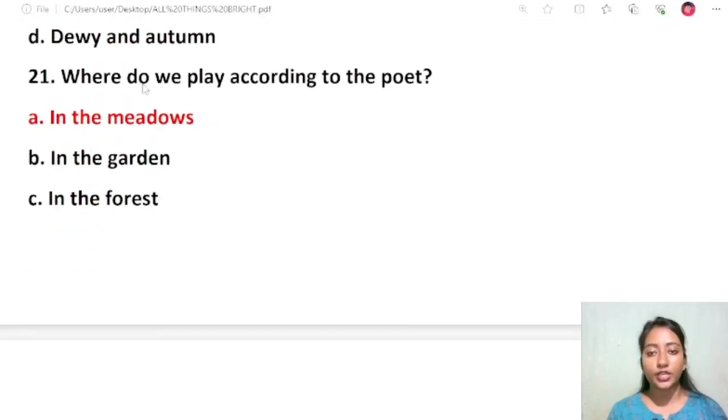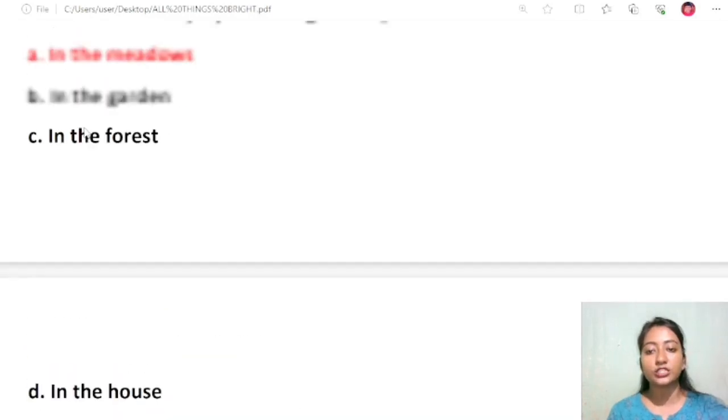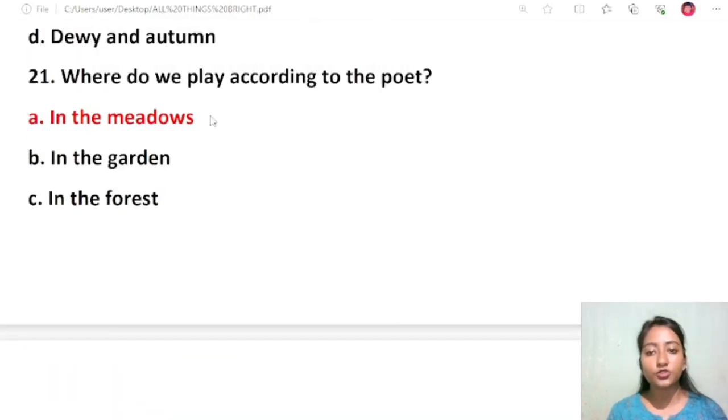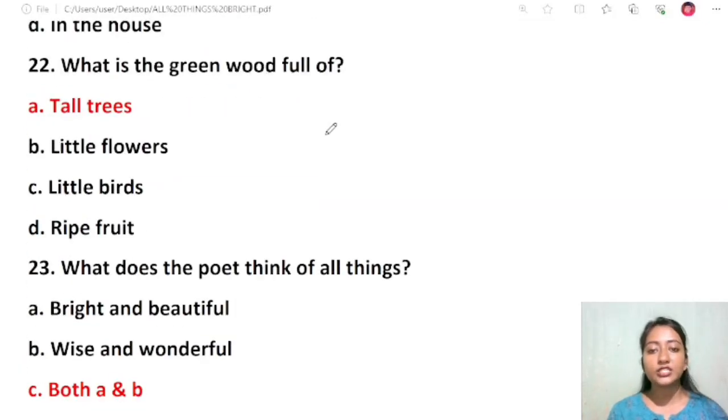Question 20: Where do we play according to the poet? In the meadow, in the garden, in the forest, in the house. The correct answer is in the meadow. Meadow is an open area of grassland. Question 21: What is the greenwood full of? Tall trees, little flowers, little birds, ripe fruit. The correct answer is tall trees. The line is tall trees in the greenwood.